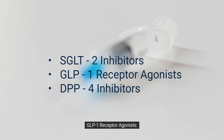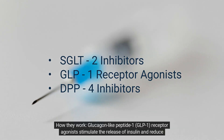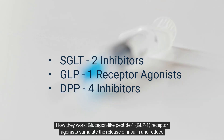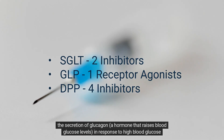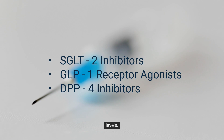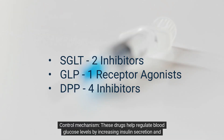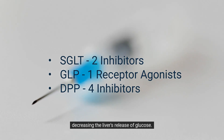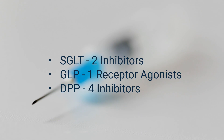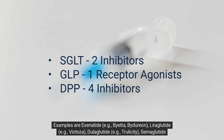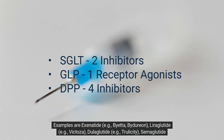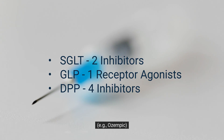GLP-1 receptor agonists: Glucagon-like peptide 1 (GLP-1) receptor agonists stimulate the release of insulin and reduce the secretion of glucagon, a hormone that raises blood glucose levels, in response to high blood glucose levels. These drugs help regulate blood glucose levels by increasing insulin secretion and decreasing the liver's release of glucose. Examples are exenatide (Byetta/Bydureon), liraglutide (Victoza), dulaglutide (Trulicity), and semaglutide (Ozempic).